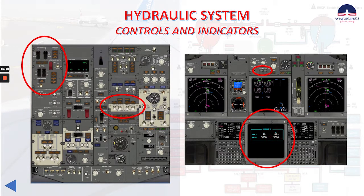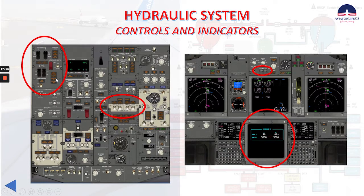Next we're going to talk about speed trim fail, which is the second light here. This means the speed trim system has failed. It indicates failure of a single FCC channel — the light illuminates when master caution is activated and extinguishes when the master caution system is reset. The next light similarly indicates failure of a single FCC channel under the same conditions. The last one is auto-slat fail, which indicates the auto-slat system has failed — specifically, failure of a single stall management yaw damper computer. It illuminates during master caution recall and extinguishes when master caution system is reset.